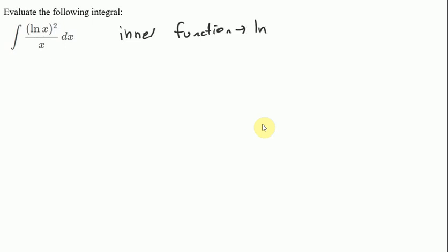The natural log of x is the inner function because it's got this exponent here. Usually something raised to an exponent you're not going to want to have to deal with that after you're done with a u sub. You might have to do some kind of second u sub with a different variable.